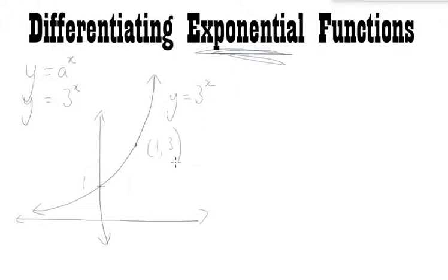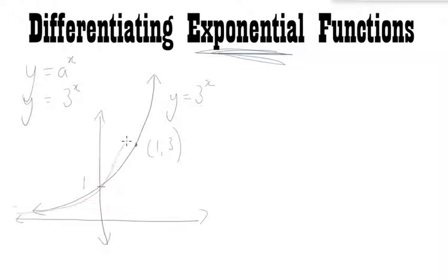When differentiating, we're concerned with gradient. Looking at 3 to the power of x, down here the gradient is positive but quite small — the graph is increasing but the increase is small. The gradient is positive the whole way, so the whole thing will be above the axis. As x approaches positive infinity, the gradient gets really steep. If I differentiate this, the gradient function is actually slightly above the original graph, so that would be dy/dx.